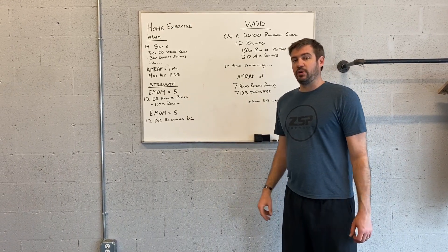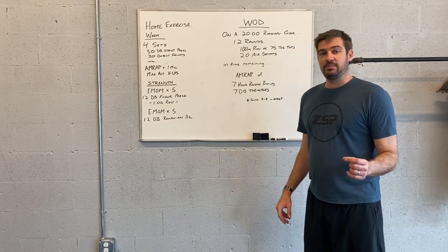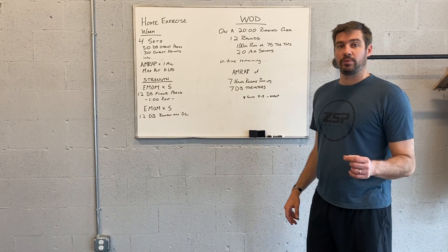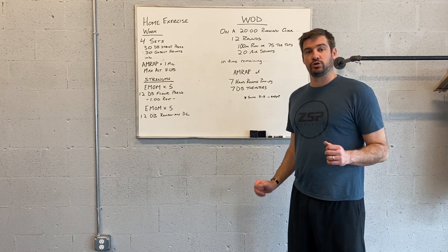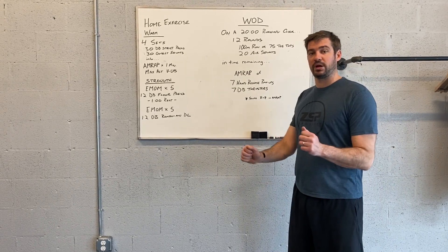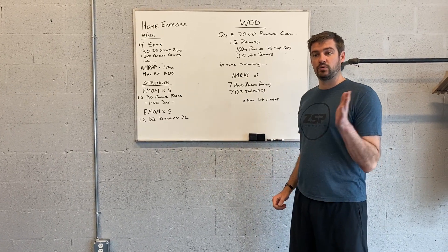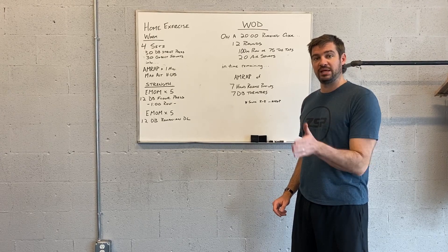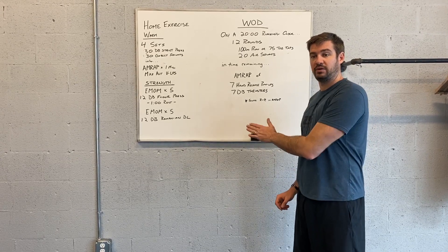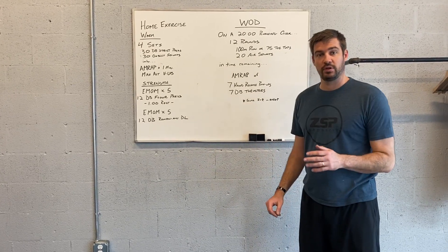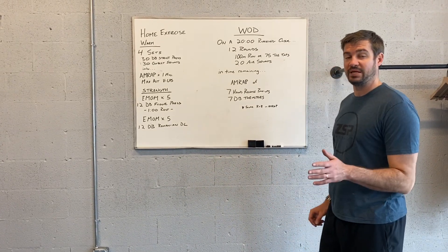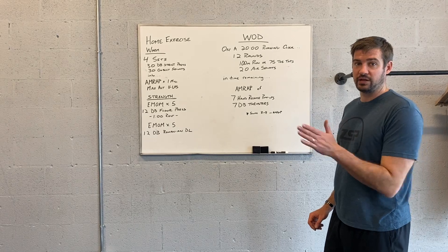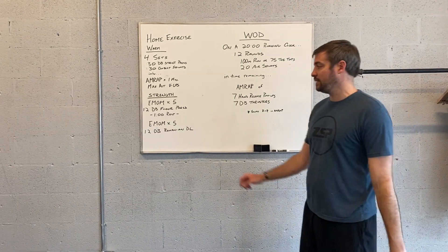That will be followed up with a five minute EMOM of 12 floor presses. So you'll do 12 floor presses, rest the remainder of that minute, and then repeat that on the minute for the full five minutes — first, second, third, fourth, and fifth minute.